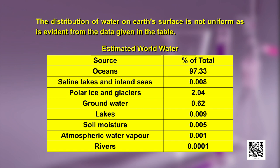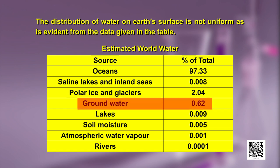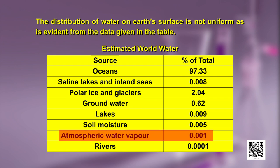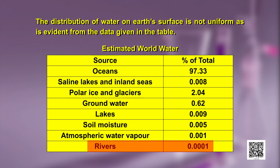In saline lakes or inland seas, water is 0.008 percent. Polar ice and glaciers have about 2.0 percent of the total water, and ground water is 0.62 percent. Lakes, though they seem to have large quantities of water, account for only 0.009 percent. Soil moisture has 0.005 percent, atmospheric water vapor has 0.001 percent, and rivers account for only 0.0001 percent.